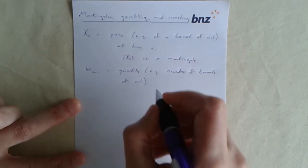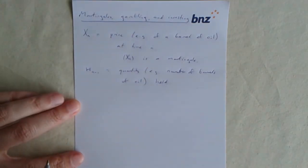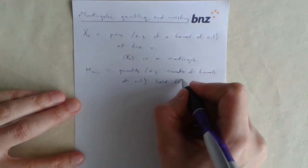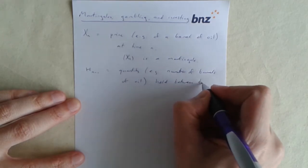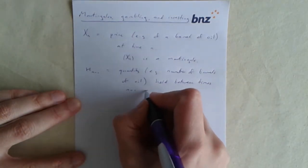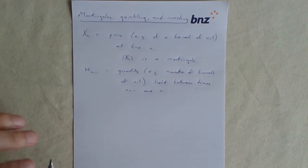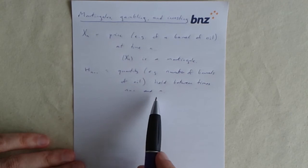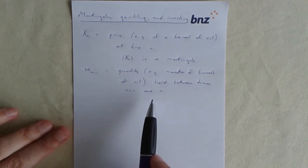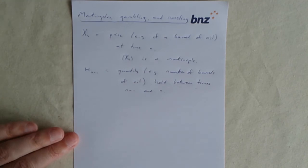Then the h that goes on, h n minus 1 is what appears in the Martingale transform, so we'll stick to that. h n minus 1 is a quantity, so the number of barrels of oil. It's the quantity that you have between times n minus 1 and n.